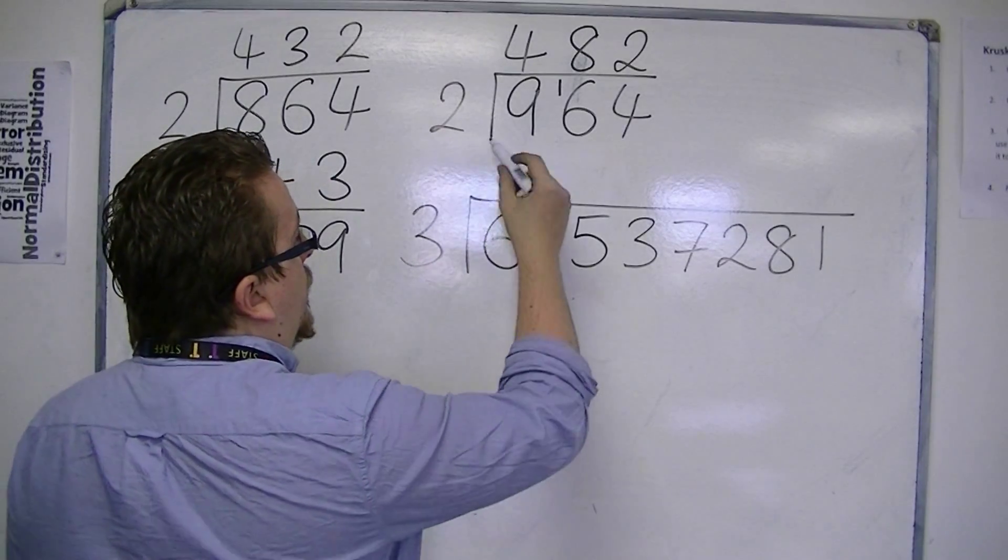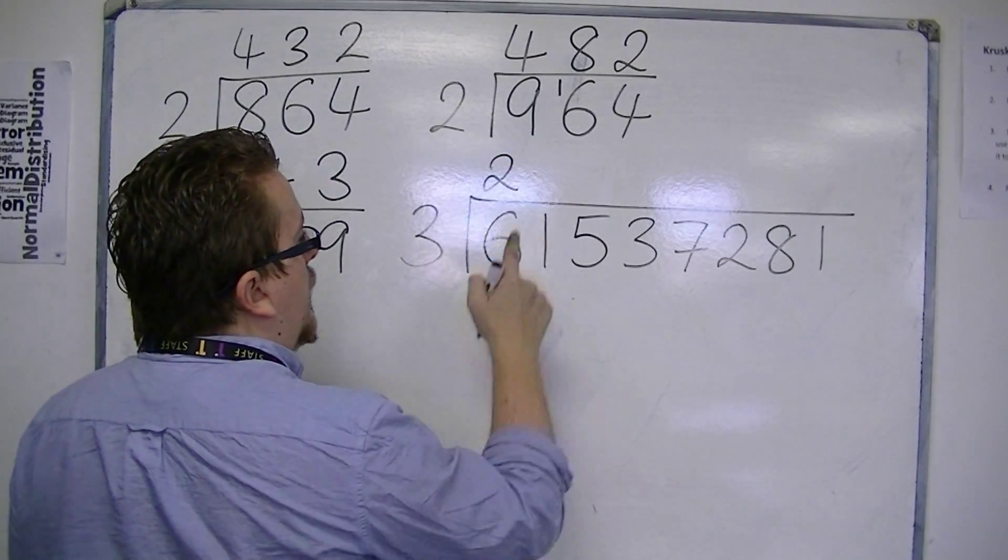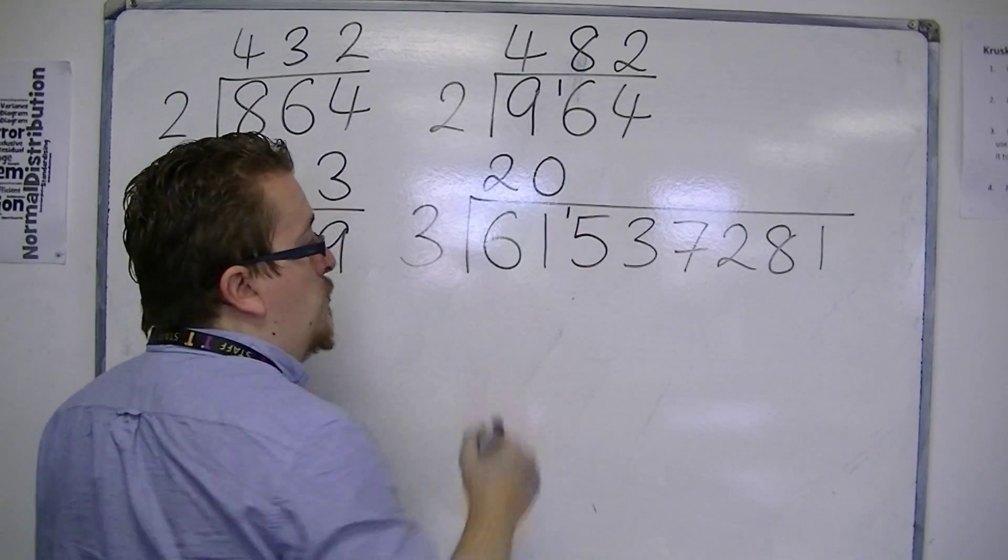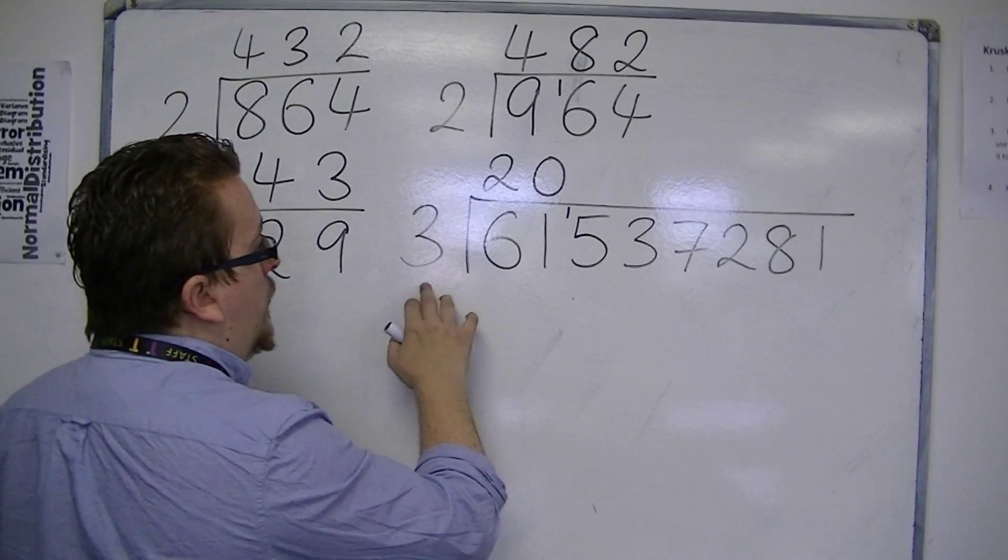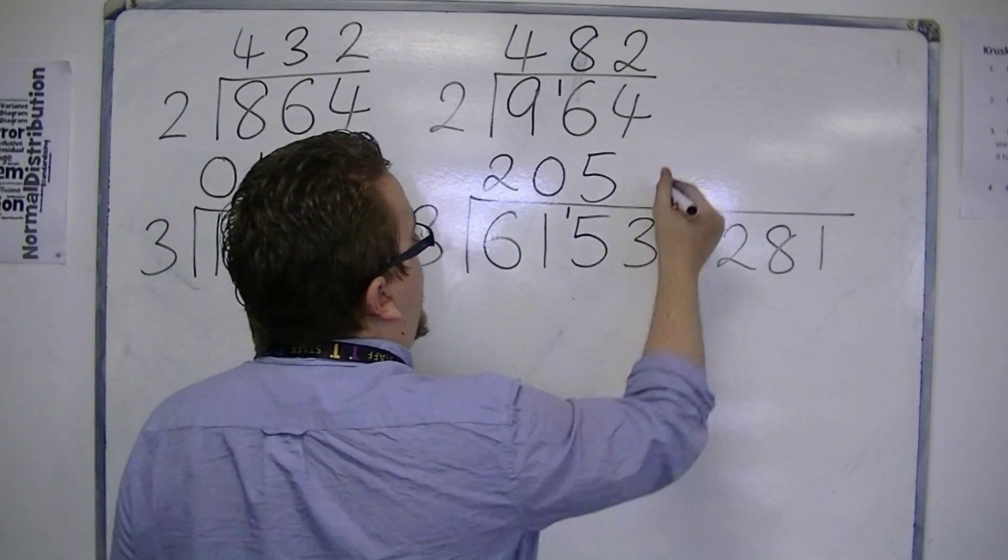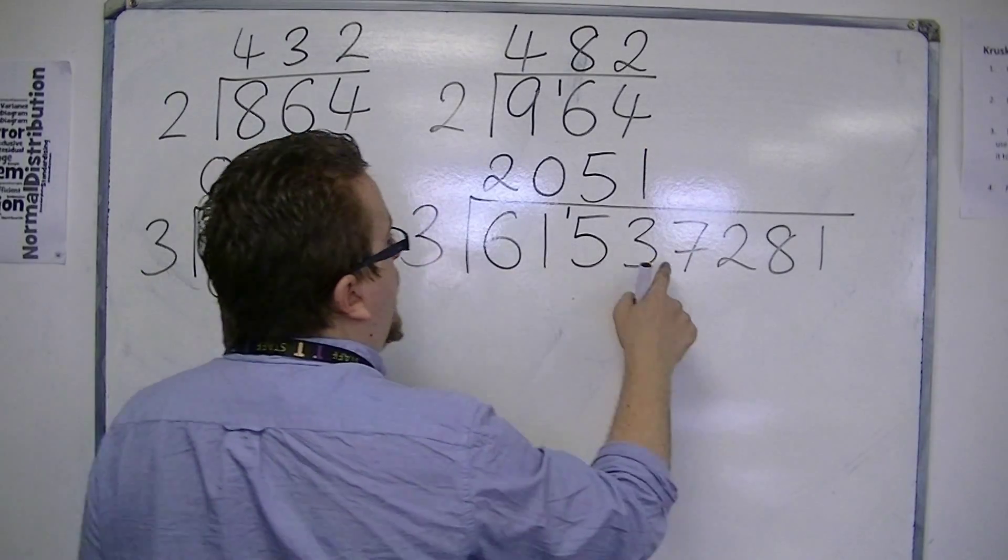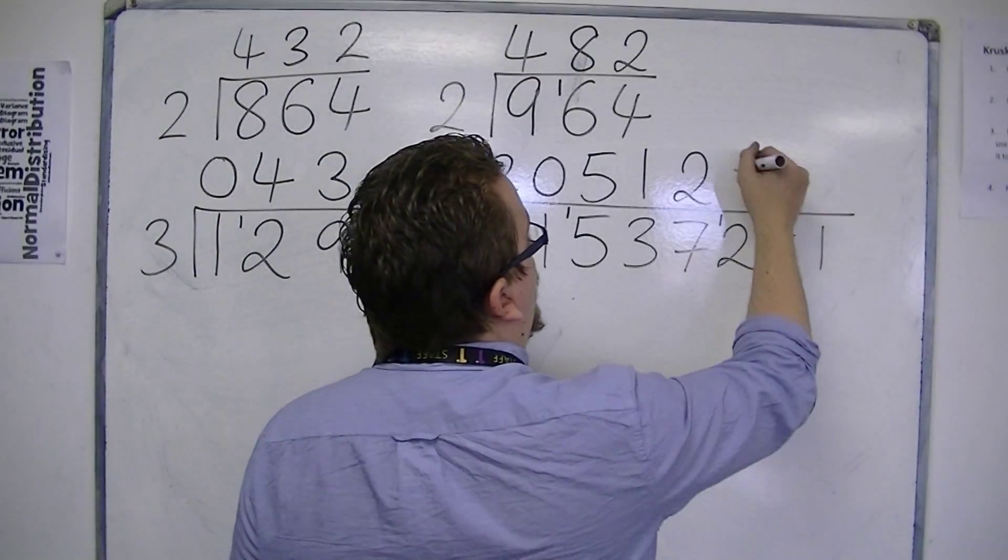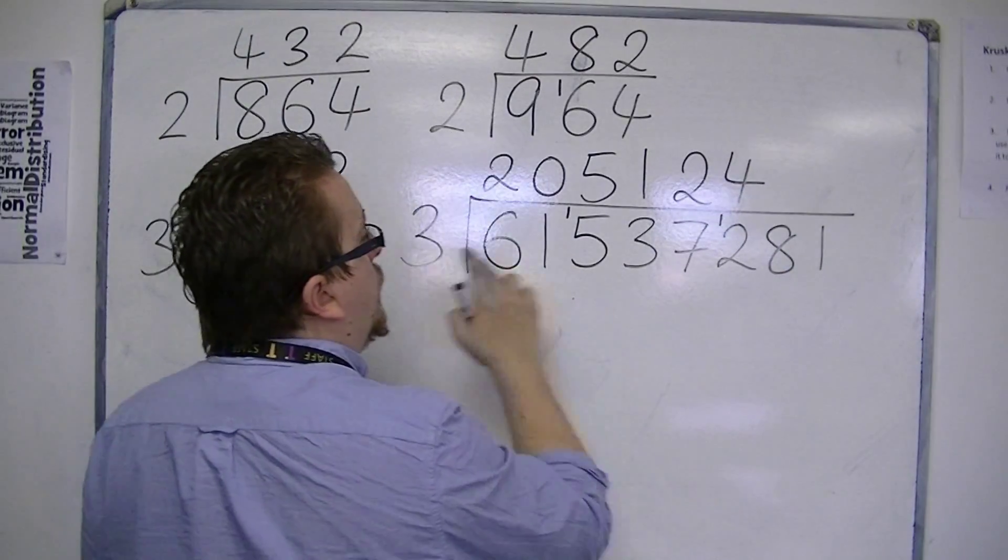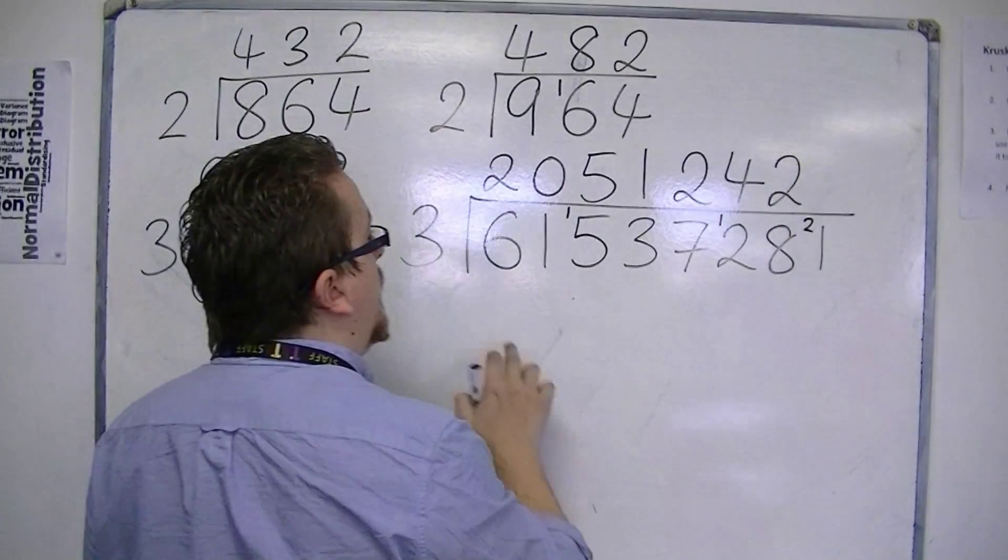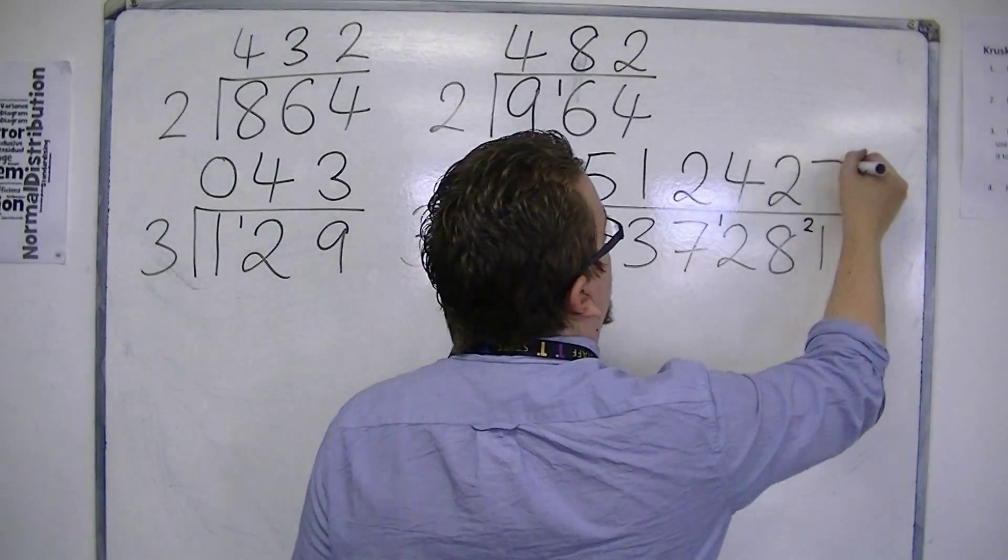3's into 6 go twice. 3's into 1 go 0 times, remainder 1. 3's into 15 go 5, 3's into 3 go once, 3's into 7 go twice with 1 left over, 3's into 12 go 4 times, 3's into 8 go twice with 2 left over, 3's into 21 go 7.